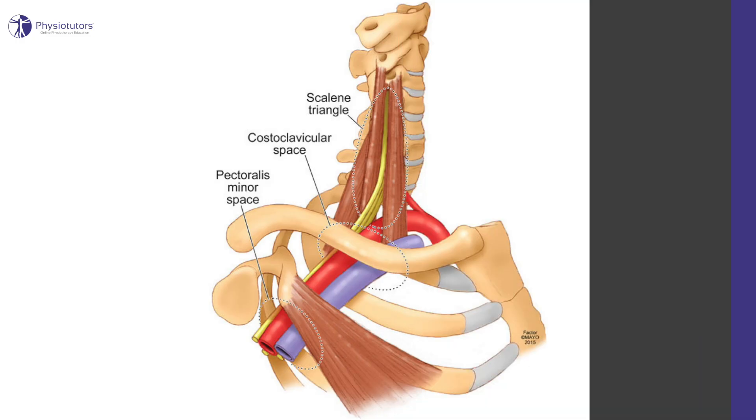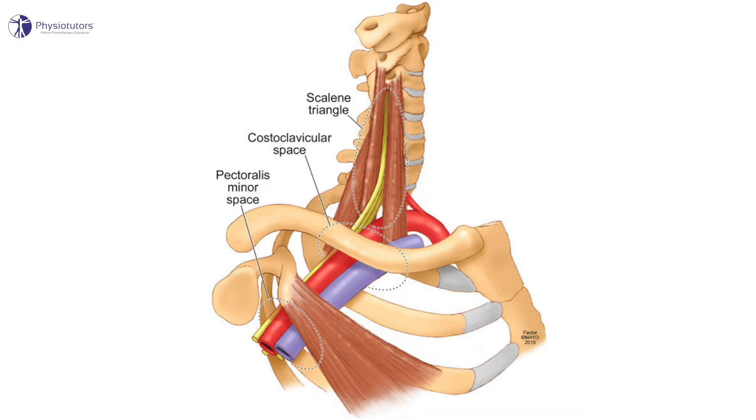This compression may be caused by several anatomical structures in one or more of the following three compartments: the interscalene triangle, the costoclavicular space, or retropectoralis minor space. The Wright's test is designed to decrease the retropectoralis minor space in the first step, while the second part of the test implicates the costoclavicular interval.